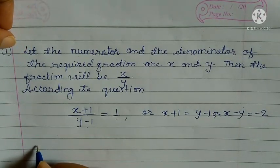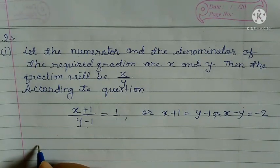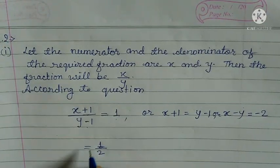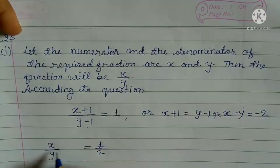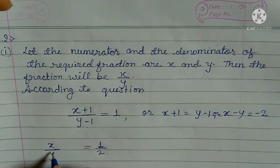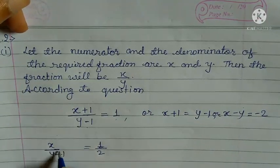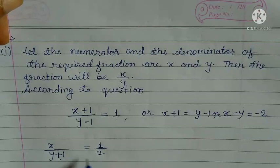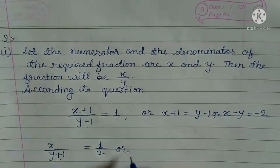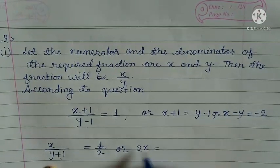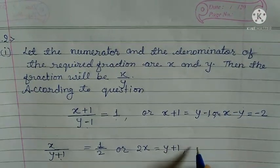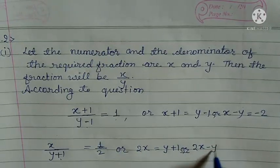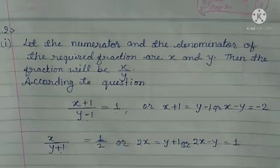For the second equation, it becomes 1 upon 2. If we add 1 to the denominator only — not the numerator — and do cross multiplication, we get 2x = y + 1, which gives us 2x − y = 1.